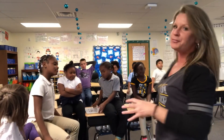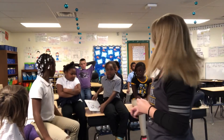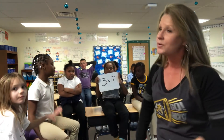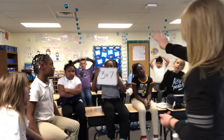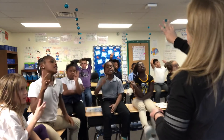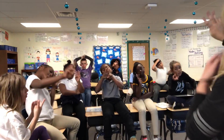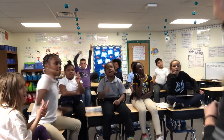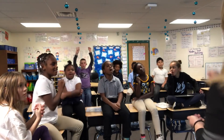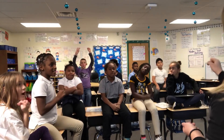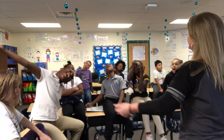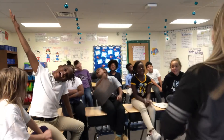Our next math problem is three times seven. So you will hold up three. And you will count by seven. Ready, go. Seven, fourteen, twenty-one. Awesome. So what is three times seven? Twenty-one. Awesome.